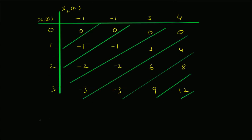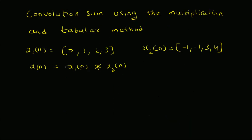Therefore, the convolution sequence from the tabular method is x(n) = {0, -1, -3, -2, 7, 17, 12}.